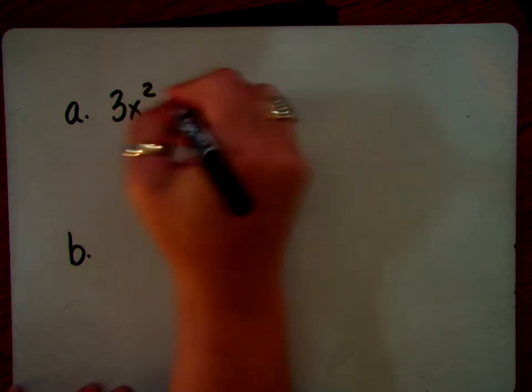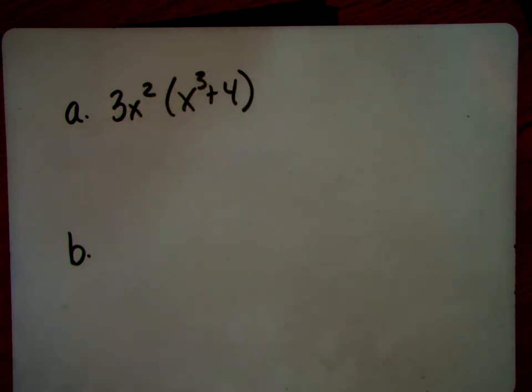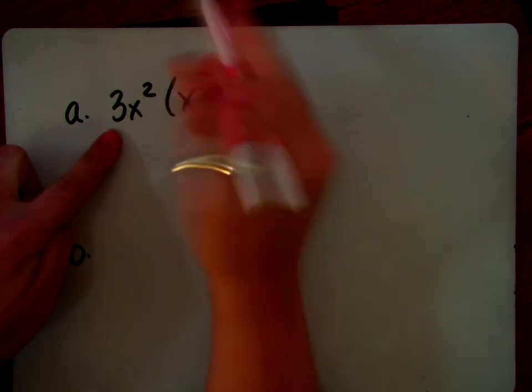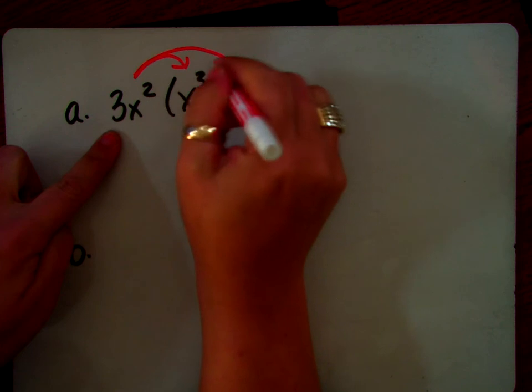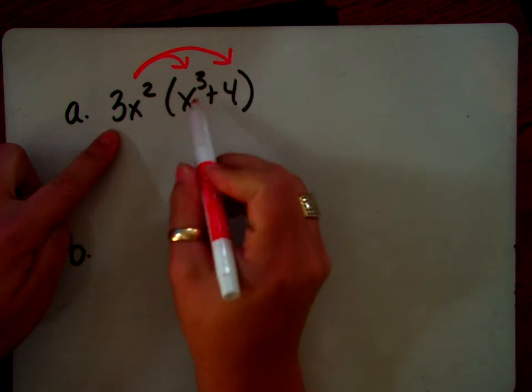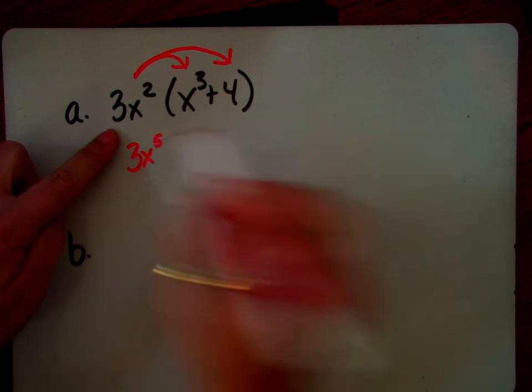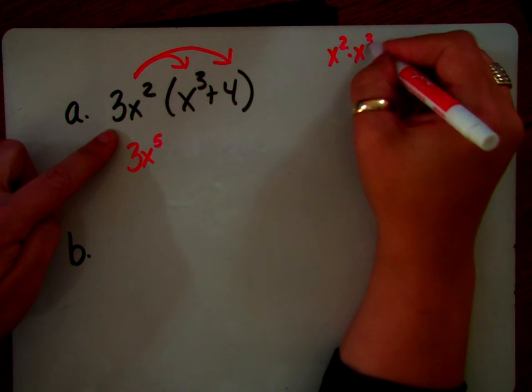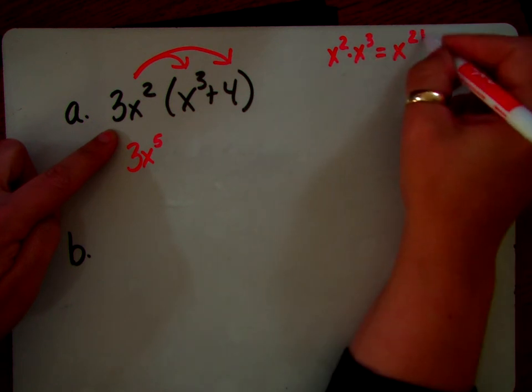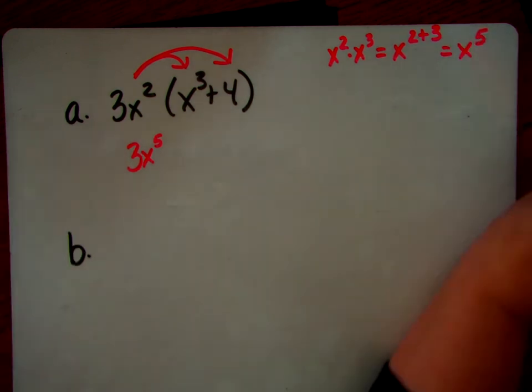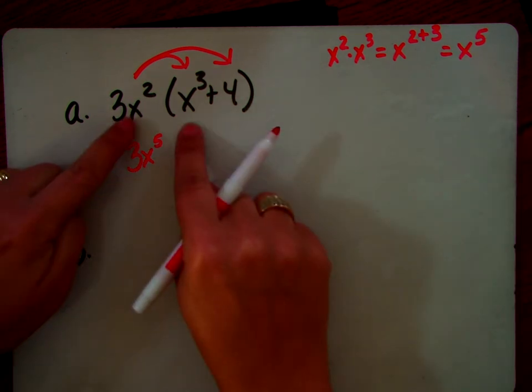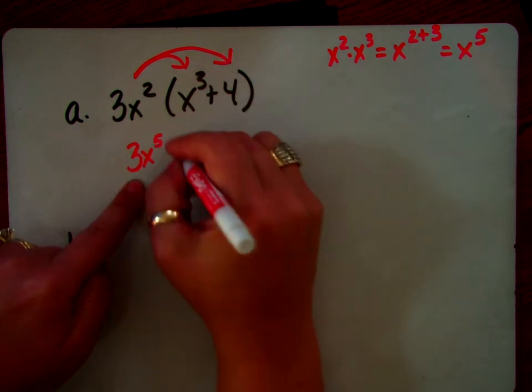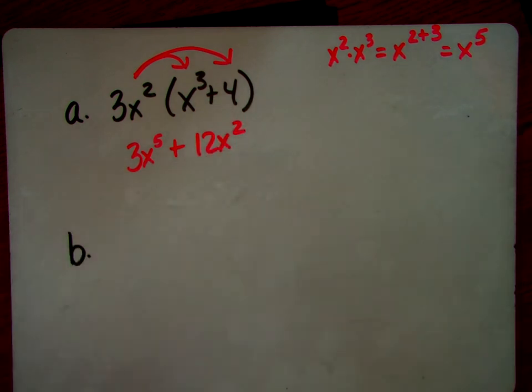So we have 3x squared times x cubed plus 4. Okay, so we're multiplying. You are distributing that 3x squared. Okay, so 3x squared times x cubed is 3x to the fifth. So remember, when you have variables with exponents, and you are multiplying, you get to add your exponents, okay? Only when we multiply, we add exponents. So you can say to yourself, well, I have 2x's here, and I'm adding 3 more x's. So now I have 5x's, okay? Okay, so now it's plus 12x squared. That would be your answer.